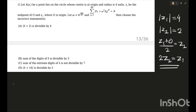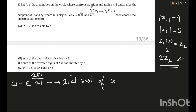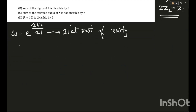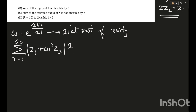They have told us to let omega equal e^(2πi/21). This basically indicates the 21st roots of unity. The target expression we have is sigma r = 1 to 20 of mod(z1 + ω^r · z2) whole squared. This is the target expression.